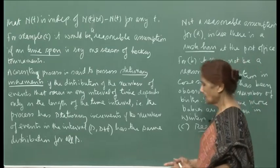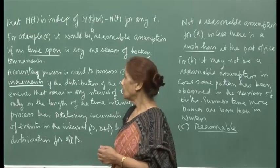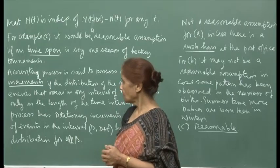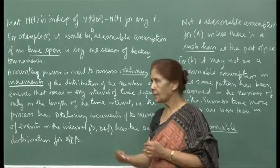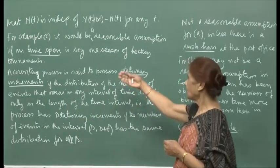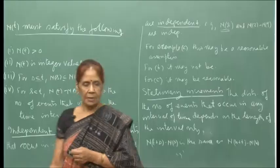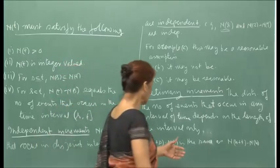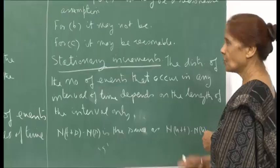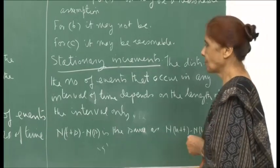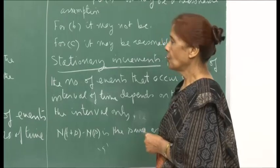This is what I am trying to say: before you start modeling a situation as a particular counting process, you have to verify that certain basic assumptions are satisfied. Based on these two assumptions — independent increments and stationary increments — we can now talk about the Poisson process. These are the two basic assumptions under which we will formulate our probabilistic model for the counting process, which we will define as the Poisson process.